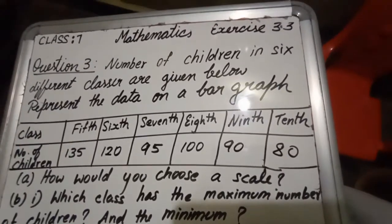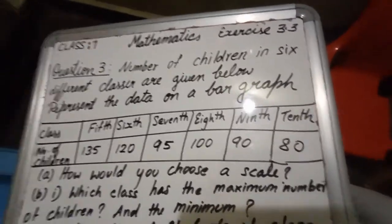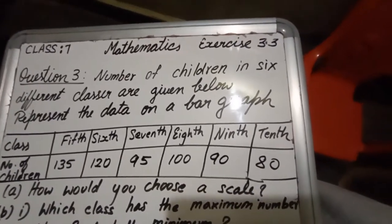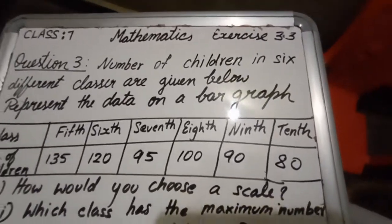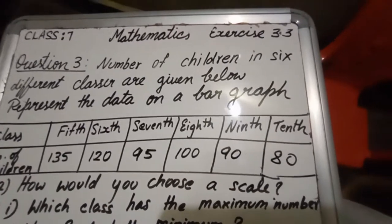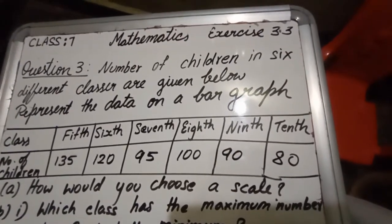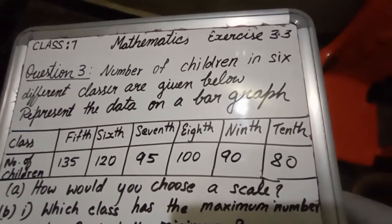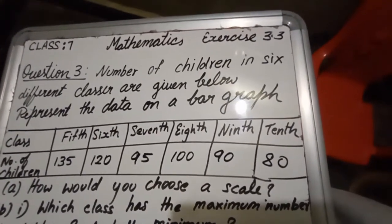Hi my dear students, let us begin mathematics exercise 3.3, question number 3. Dear students, in the question they have given the information: number of children in 6 different classes are given below. Represent the data on a bar graph.